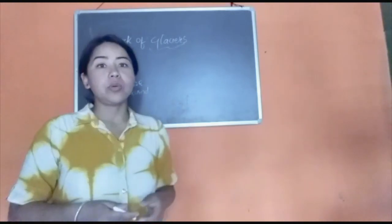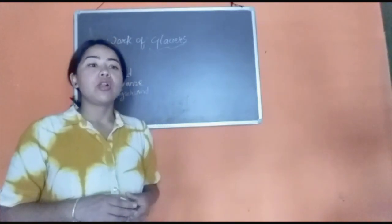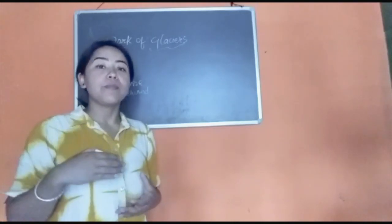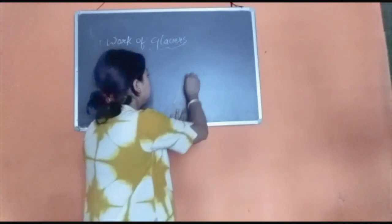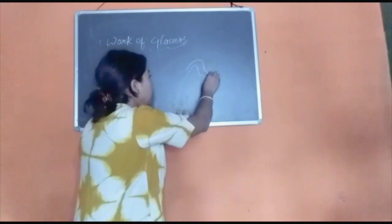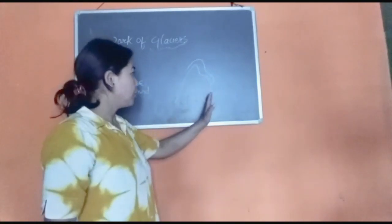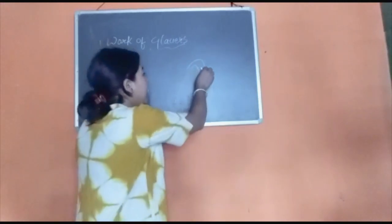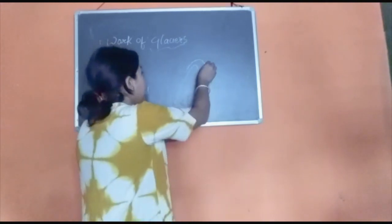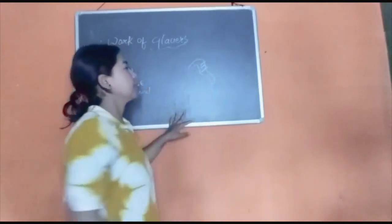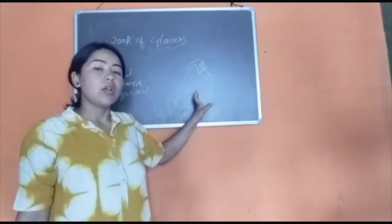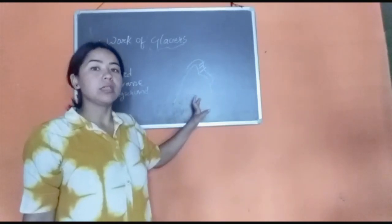Next is the crevasse. Crevasses are small cracks or fractures which develop when glaciers move along the bends of a mountain. When the glacier is moving downwards along a bend it cannot bend accordingly, so it will break. This crack or fracture which occurs on glaciers when it moves along the bends is known as a crevasse.